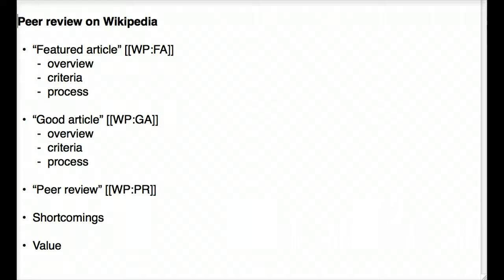On the screen you'll see a list of a few different kinds of peer review on Wikipedia. I'm going to tell you first about the featured article status, then about the good article status, then we'll talk about the thing that's called peer review, and then I'll talk about the shortcomings and the value of the various peer review processes on Wikipedia.